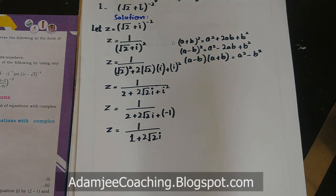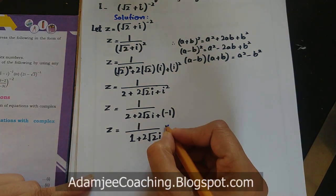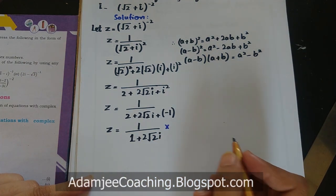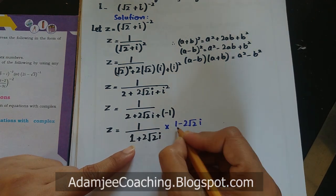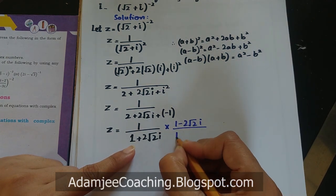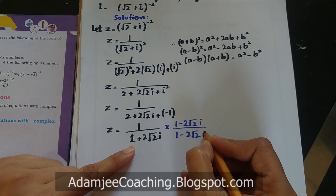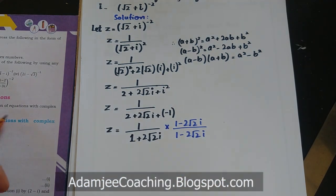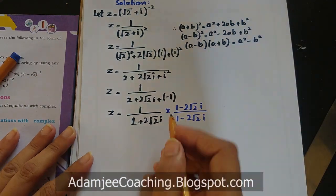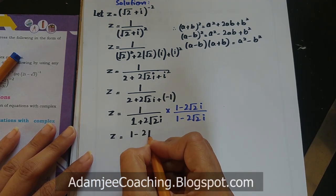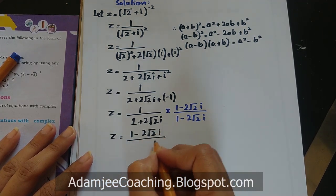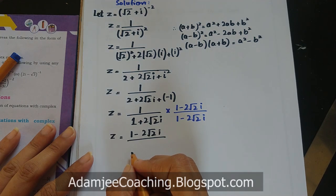अब यहां पर rationalization करनी होगी क्योंकि denominator में iota आ गया। तो इसके conjugate से multiply भी करना है और divide भी करना है। ऊपर 1 से multiply होके यह आ जाएगा: 1 minus 2√2·iota।